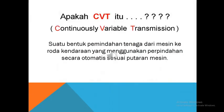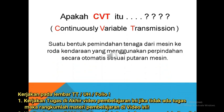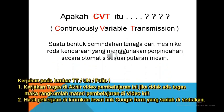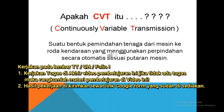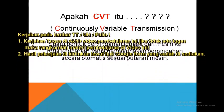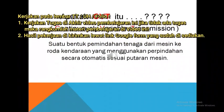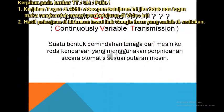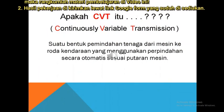Apakah yang dimaksud dengan CVT itu? CVT adalah Continuously Variable Transmission, di mana suatu bentuk pemindahan tenaga dari mesin ke roda kendaraan yang menggunakan perpindahan secara otomatis sesuai putaran mesin. Di mana pergantian transmisinya sangat lembut sesuai dengan penambahan tenaga pada mesin. Komponen utamanya adalah Drive Pulley, V-Belt, dan Driven Pulley.